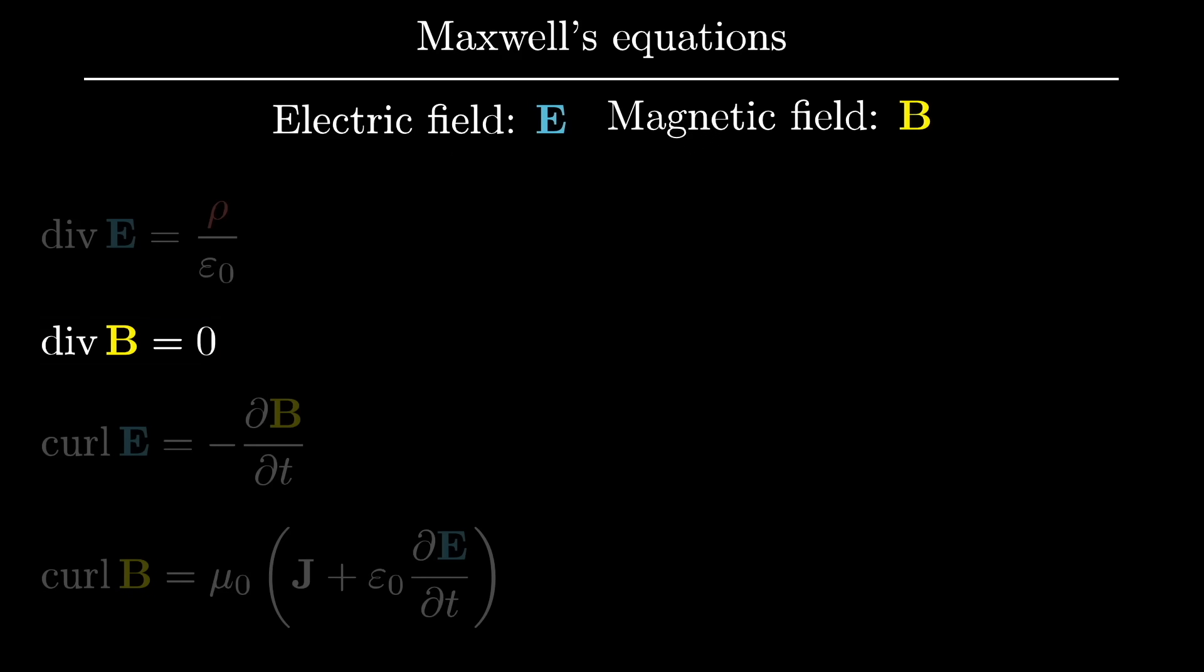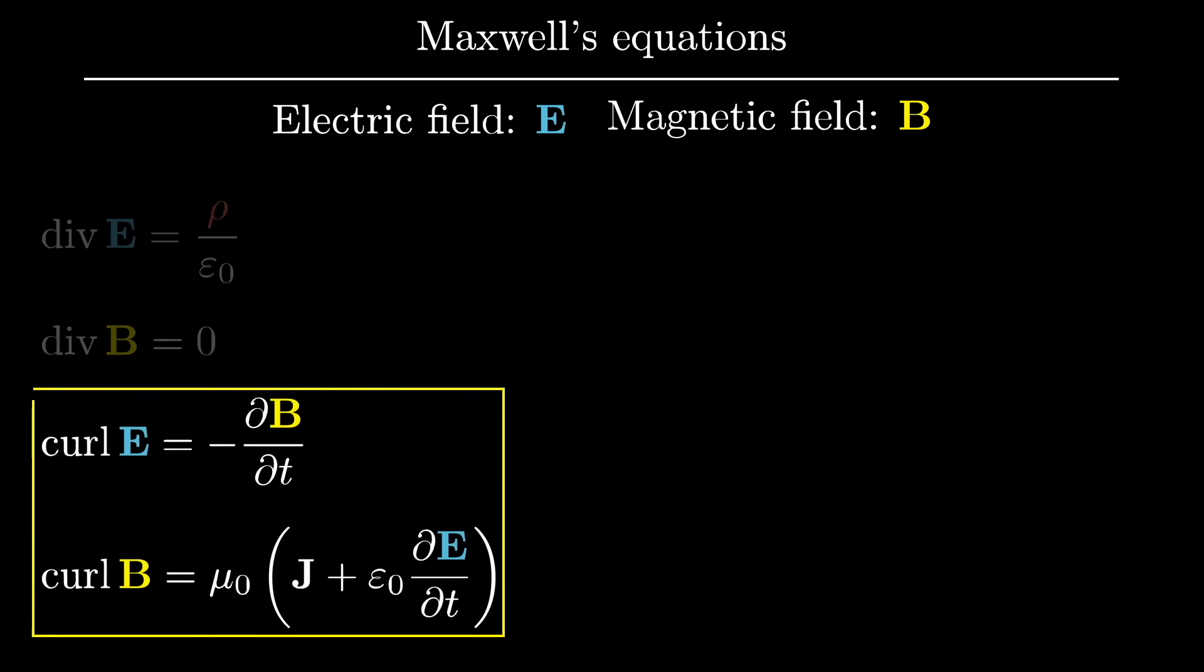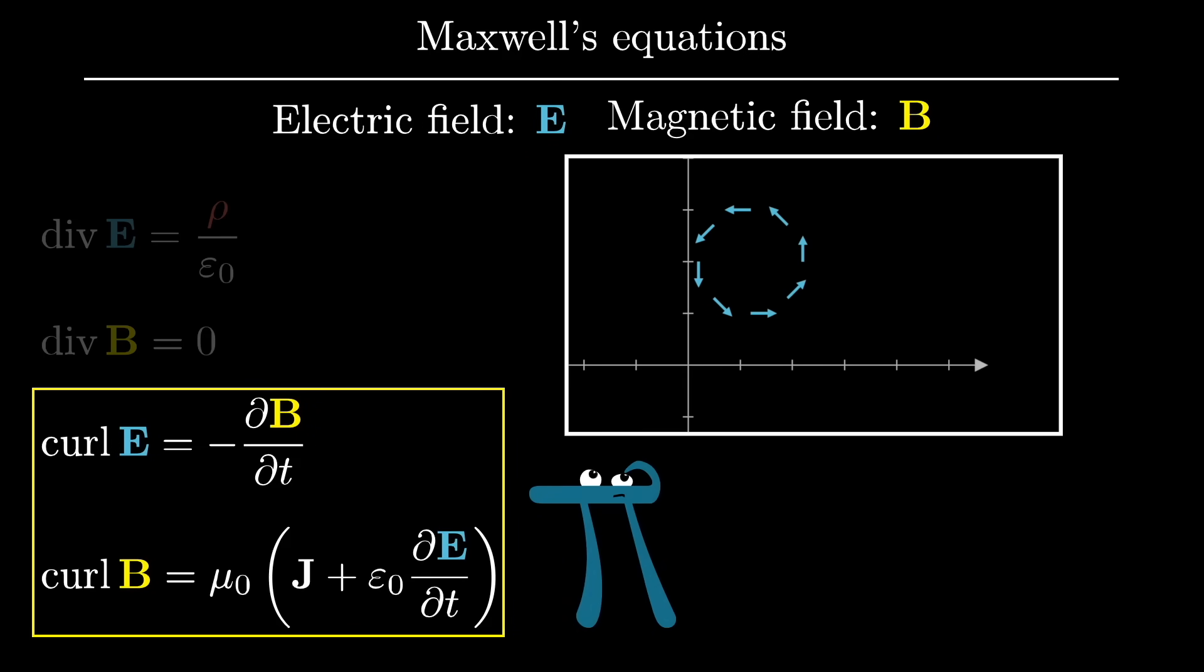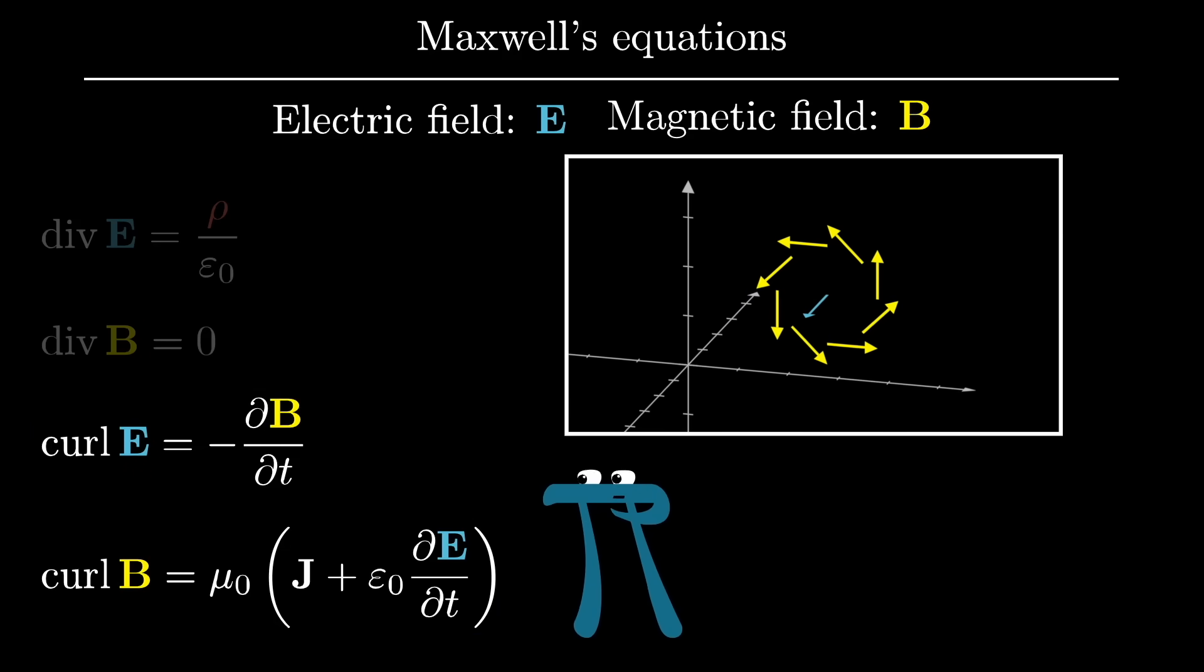Likewise, the last two equations tell us that the way that one of these fields changes depends on the curl of the other field. And really, this is a purely three-dimensional idea, and a little outside of our main focus here. But the point is that divergence and curl arise in contexts that are unrelated to flow.